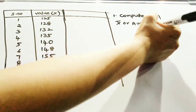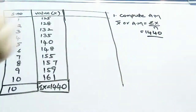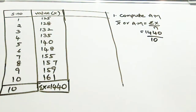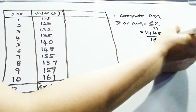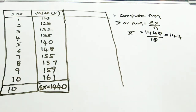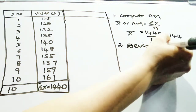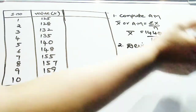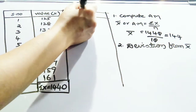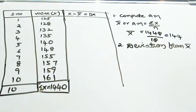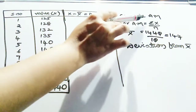The sum of the x values is 1,440. Substituting in the formula: 1,440 divided by N, where N is the number of items equal to 10. Using your calculator, 1,440 divided by 10 gives 144. So x-bar, the arithmetic mean, is 144. The second step is to find the deviation from x-bar. The deviation is calculated as: x minus x-bar equals dx.